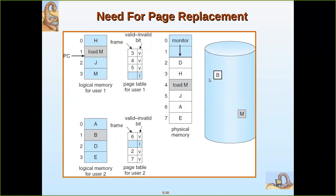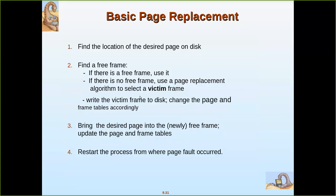B has to be loaded, but how can it be loaded because the memory is already full with four pages? Which page has to be removed? Because main memory is completely full, any one of the frames has to be erased. For example, if we decide to remove H, the new page can be placed there. But how do you decide which frame has to be removed? If there is no free frame, use a page replacement algorithm.